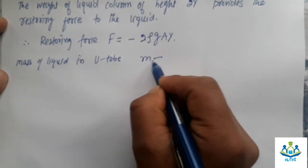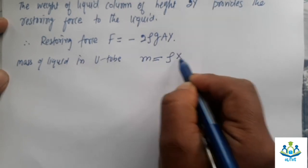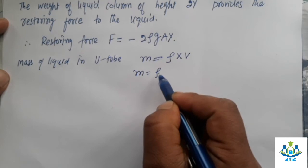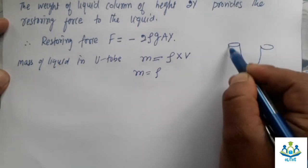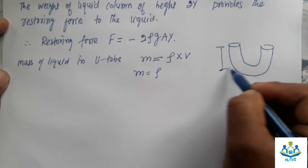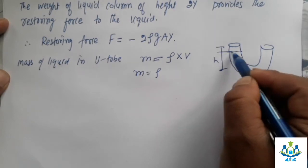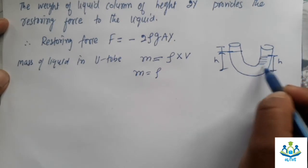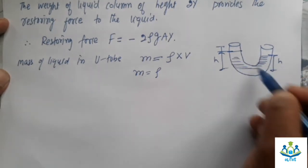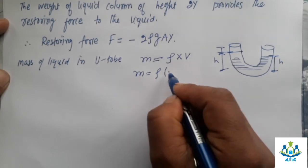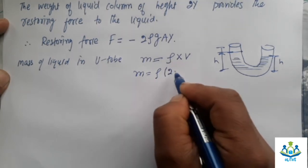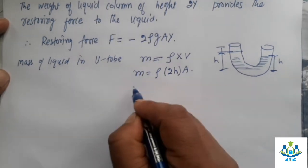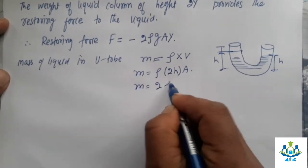Again, mass will be equal to density into volume. Mass density is ρ and the volume of this U-tube column of height H from this side. Then this side, the liquid is in both sides. So it will be 2H into area cross section. M is 2ρAH.